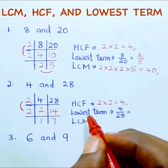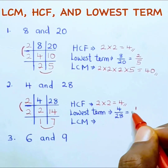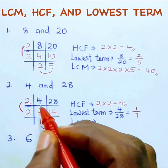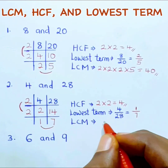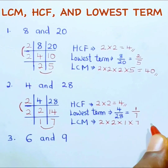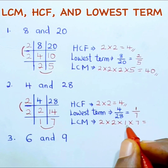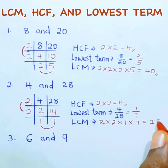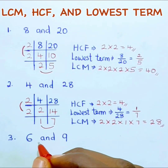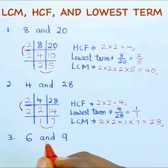Our lowest term is 1 over 7. For the LCM, we multiply all the numbers: 2 times 2 times 1 times 7. 2 times 2 is 4, 4 times 1 is 4, and 4 times 7 is 28. So our LCM is 28. Now find the HCF, lowest term, and LCM of 6 and 9.